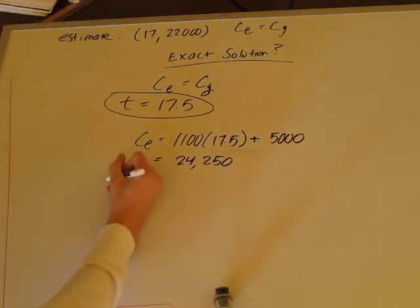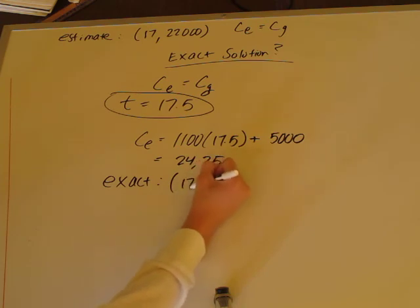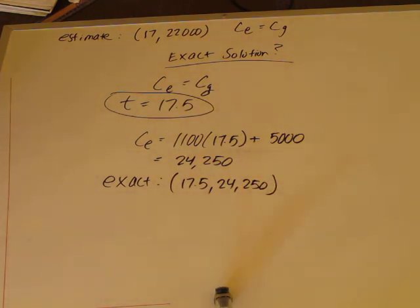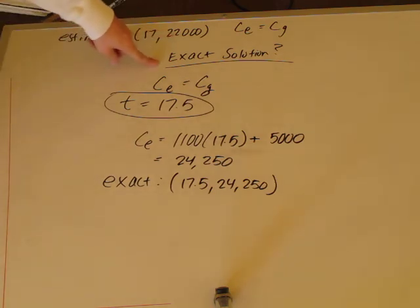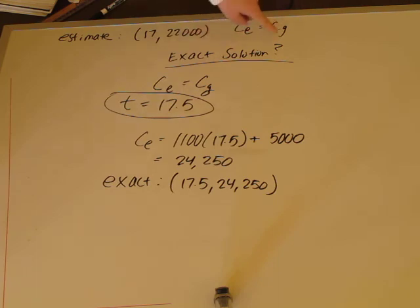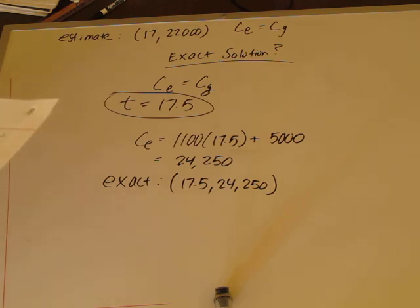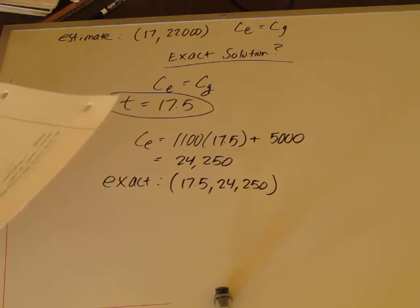You can verify by plugging 17.5 into the gas formula — you'll get the same $24,250 value. For homework, find the exact solution for when the cost of gas equals the cost of solar and when the cost of electric equals the cost of solar. Then answer this question in your notebook: if cost were the only issue, how would you decide which system to use? Leave it blank until you finish all the homework.